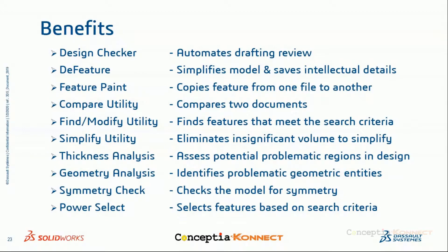The Simplify utility simplifies the model by eliminating insignificant features or volume based on the specified value. Thickness Analysis shows regions that fall below or above the specified thickness range, allowing design changes where necessary. The Geometry Analysis tool identifies problematic entities like short edges or sliver faces that can cause potential problems when meshing in FEA software or using in CAM software. The Symmetry Check is used to check and ensure the model is perfectly symmetric about a specified plane, showing symmetric and asymmetric faces with color coding. Power Select is handy for selecting different features by criteria and supports multi-selection.